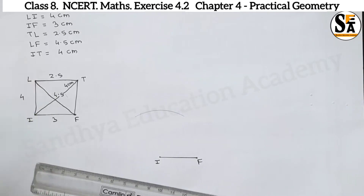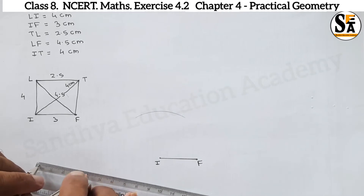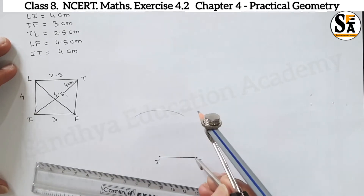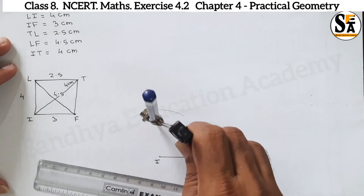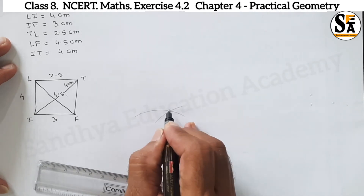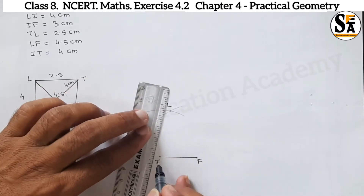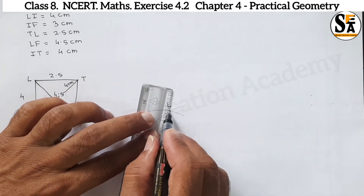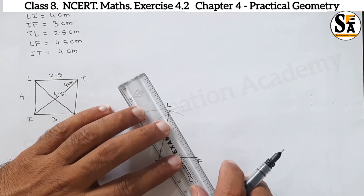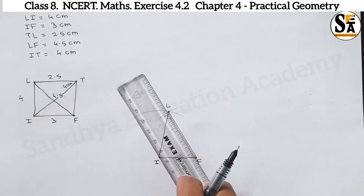Make an arc of 4.5 cm from point F. The intersecting point of these two arcs will be point L. Draw line IL — join these two points, and also draw this diagonal since its dimension is given.